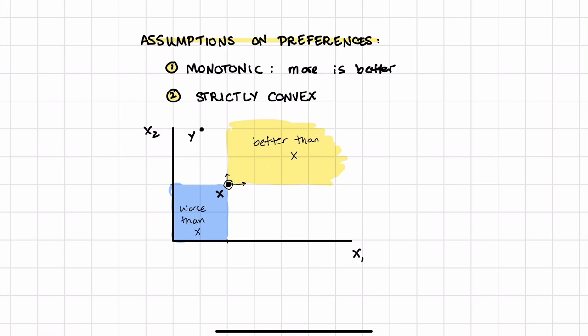So that's the first assumption that we're going to make on preferences. The second assumption we're going to make is that preferences are strictly convex, which just means that they, I'll say, indifference curves bow inward. They have some kind of curvature that is a bowing toward the origin.